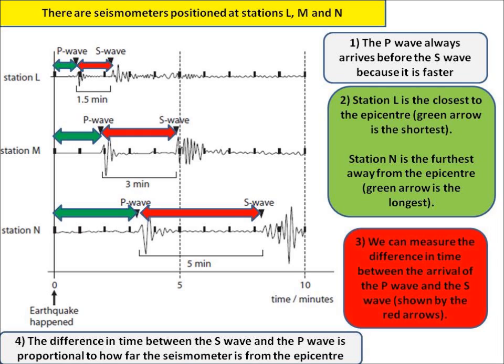We can also see that station L is closer to the epicenter than station N because the P wave gets to station L before it gets to station N.